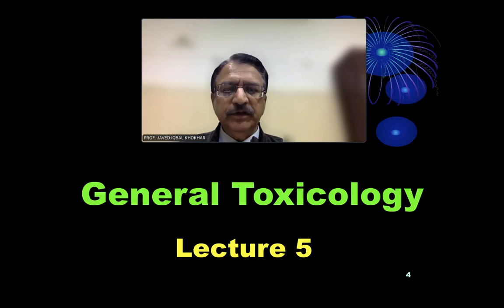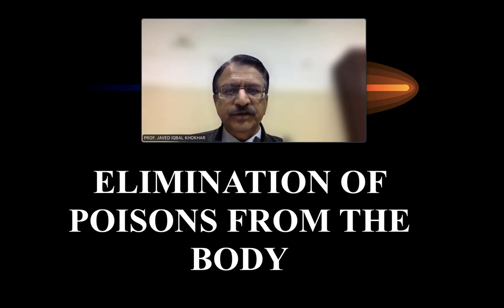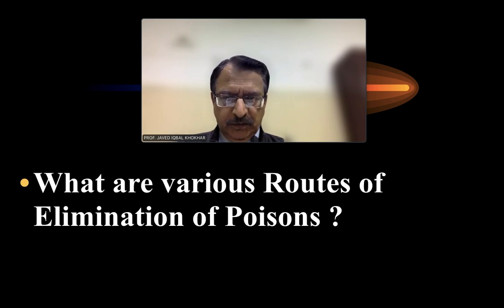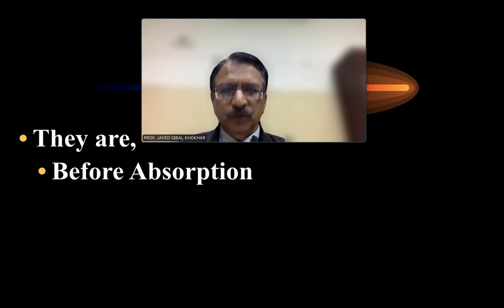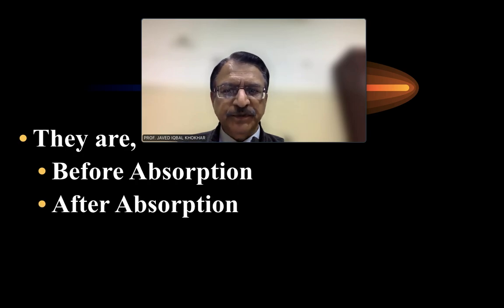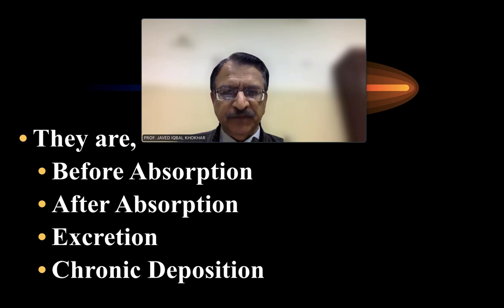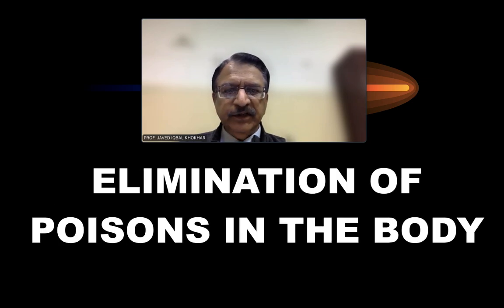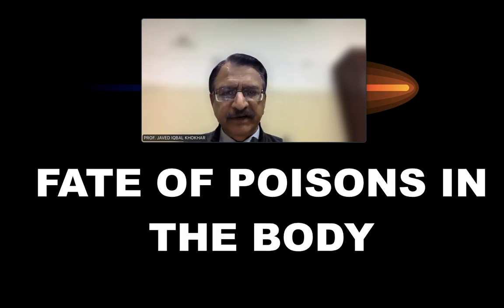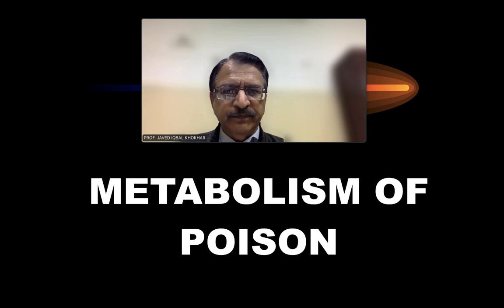Bismillahirrahmanirrahim. Continuing with lecture number 5 on genotoxicology, this lecture will discuss the elimination of poisons from the body — the various routes of elimination: before absorption, after absorption, excretion, and chronic deposition. These are the various routes of elimination, or the fate of poisons within the body, also called metabolism of poisons in the body.